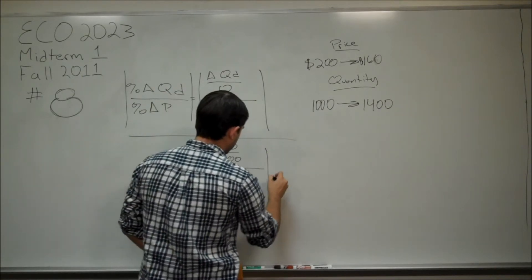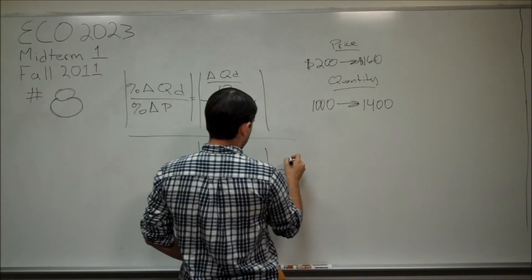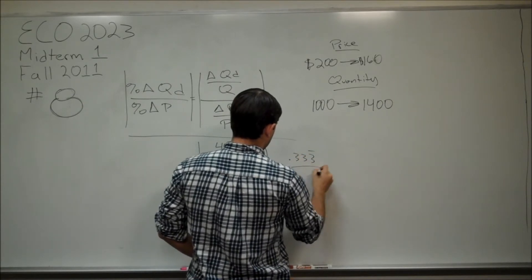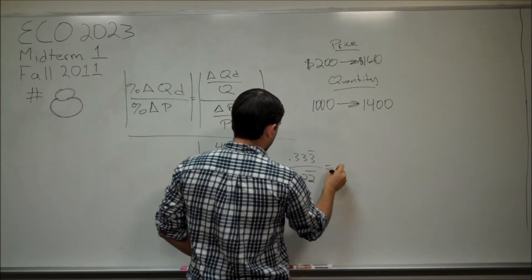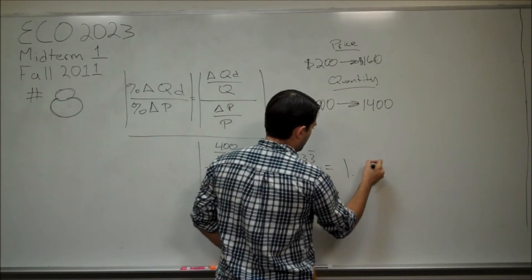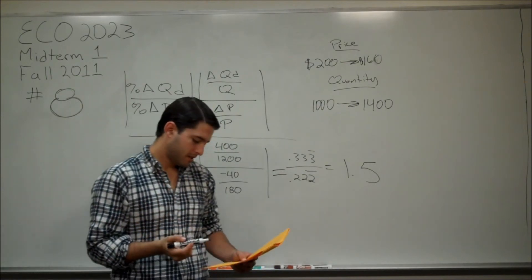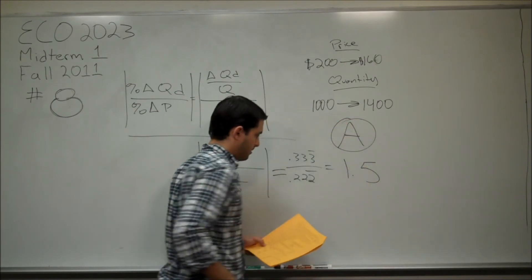Again, these are absolute values. What this ends up coming out to is about 0.333333 divided by 0.222222, which is roughly 1.5. And that's your answer. It's A, 1.5.